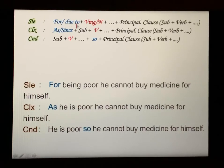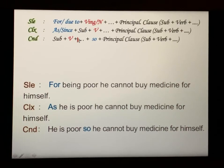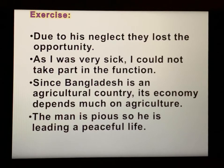Let's review the first rule. For simple sentences use 'for' or 'due to'. For complex sentences use 'as' or 'since'. For compound sentences use 'so'. Now let's move to our next rule.